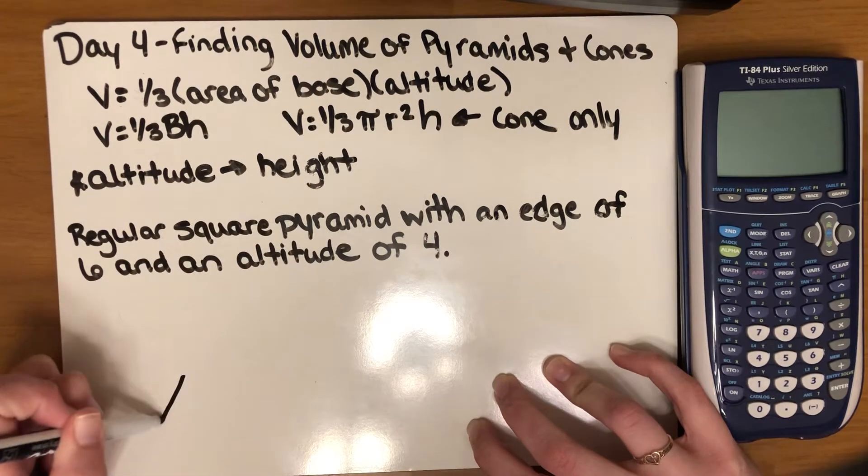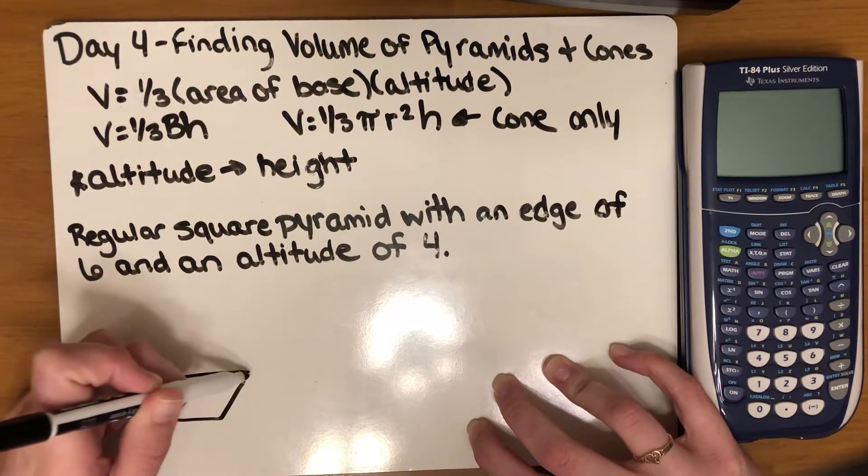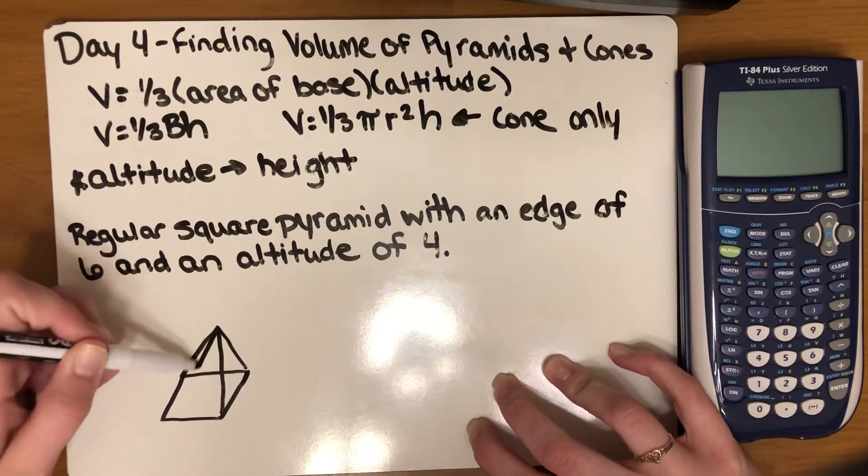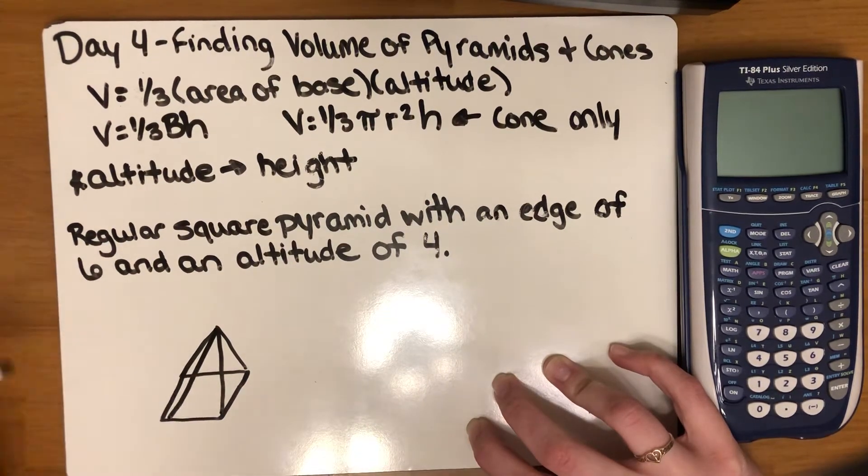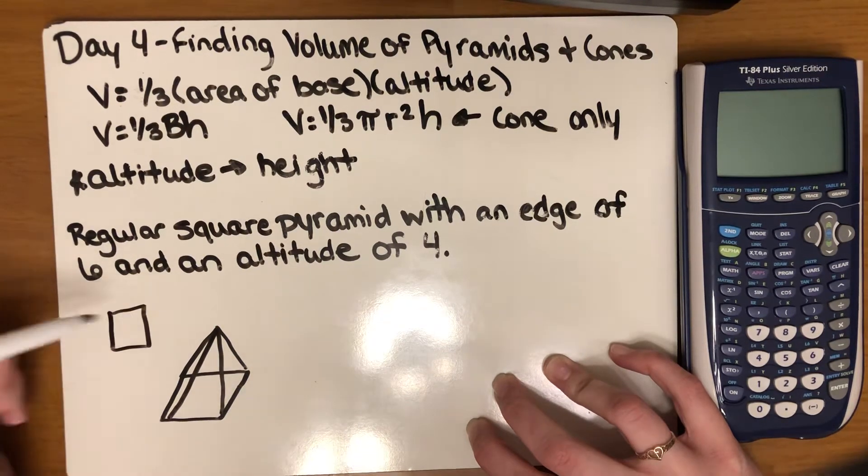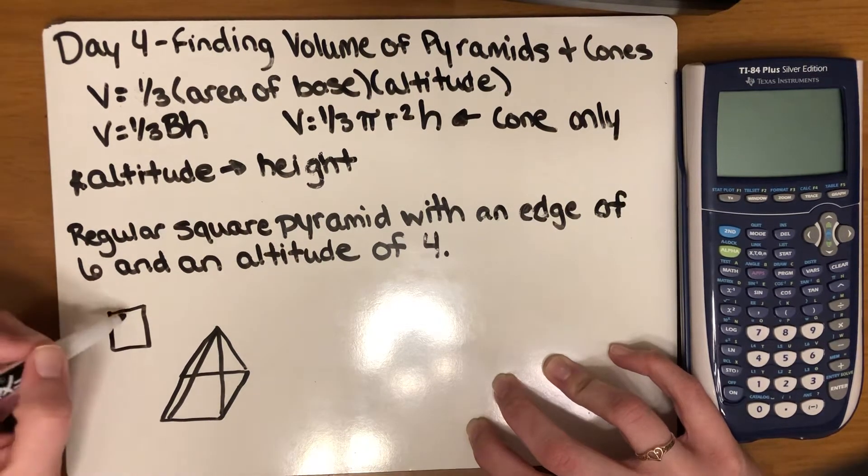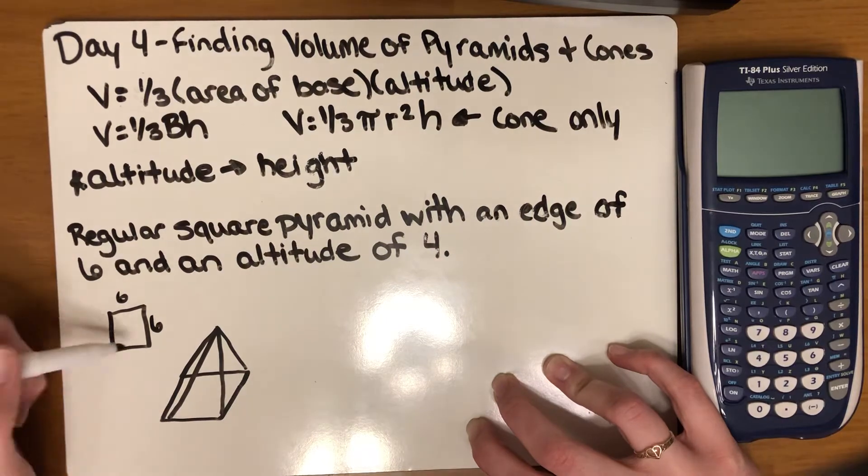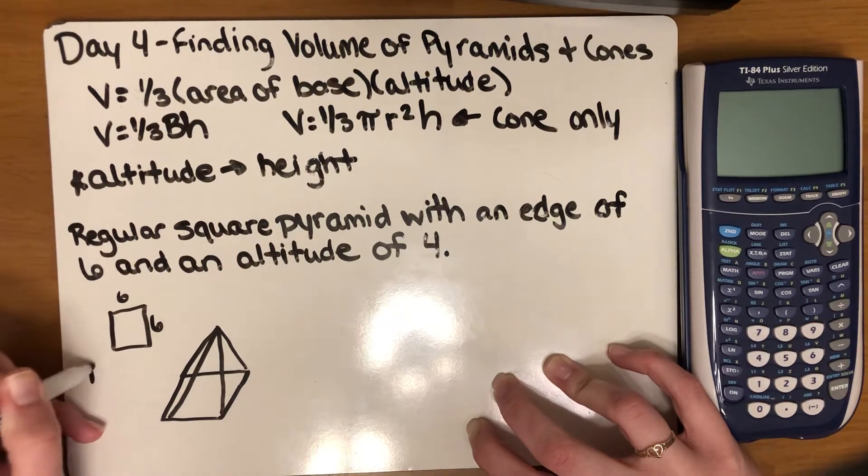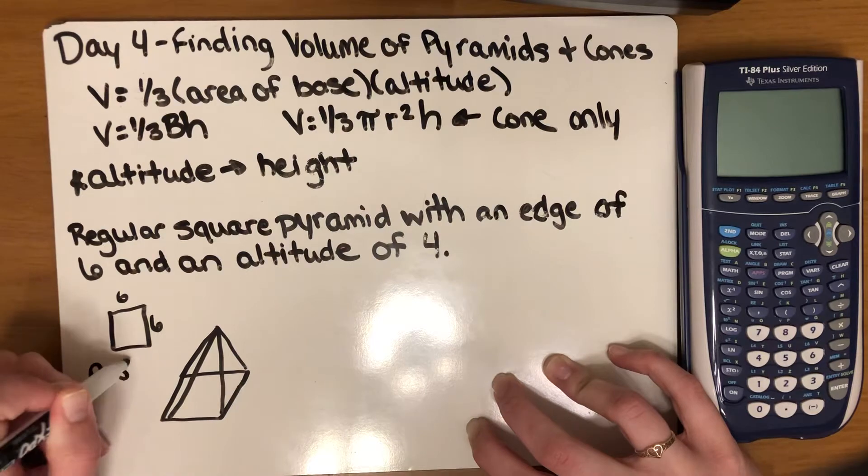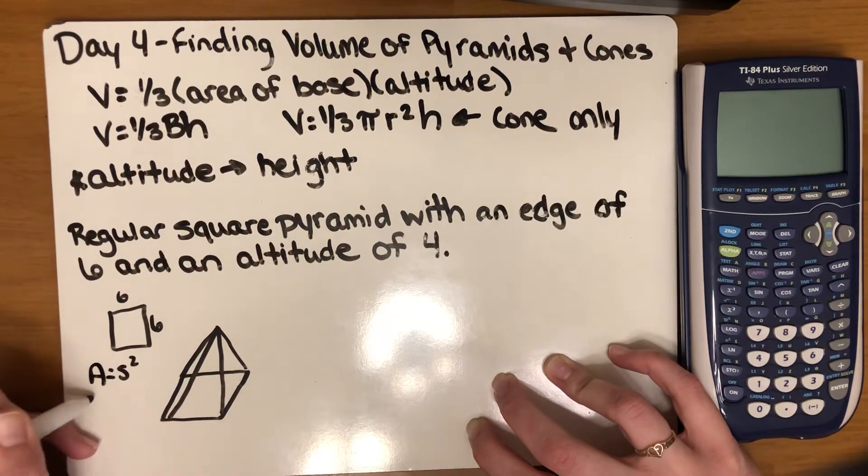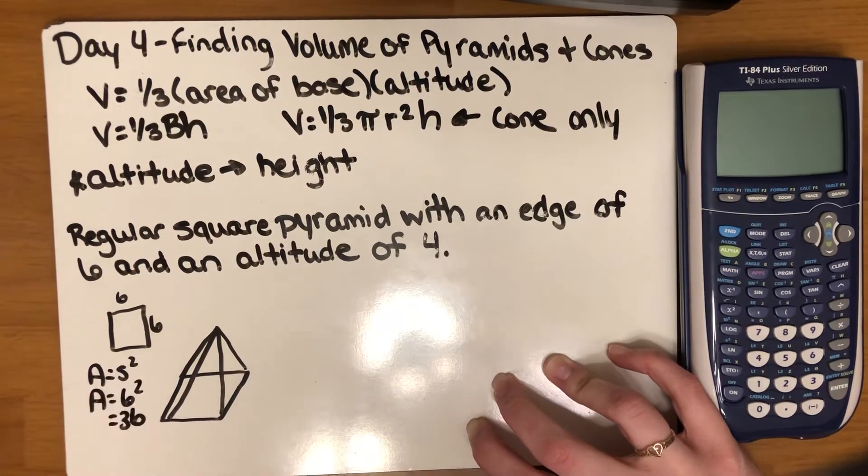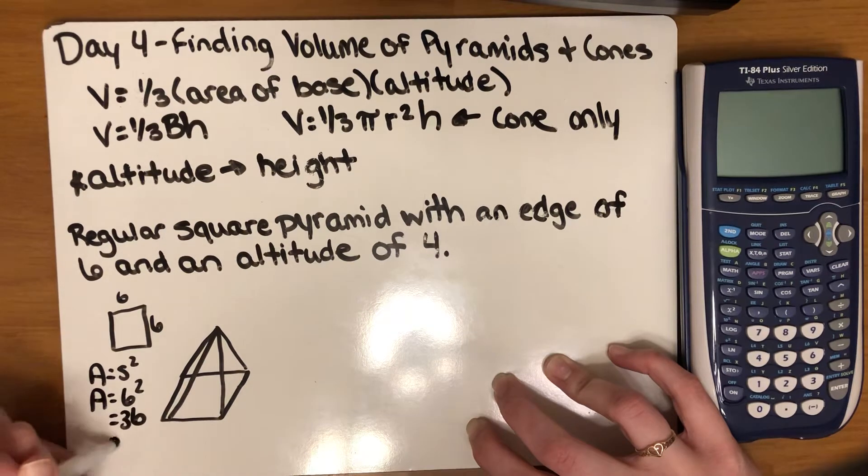When you're looking at this it would look something like this as far as the shape itself. This base down here is a square, just drawn slanted to the side for the purpose of drawing it as a two-dimensional shape. Each of the edges on this base square is six. To find the area of a square you're going to do side times side or side squared. This would be six times six or six squared which is 36. This is our area of the base.